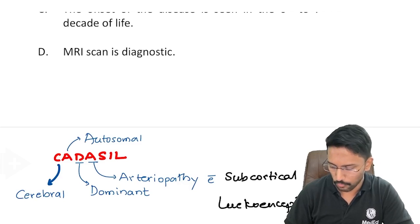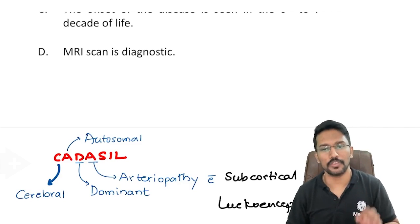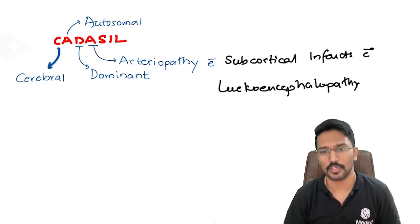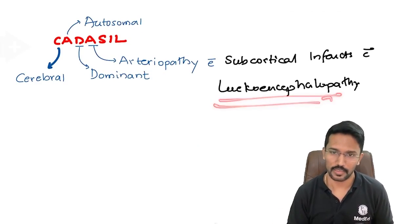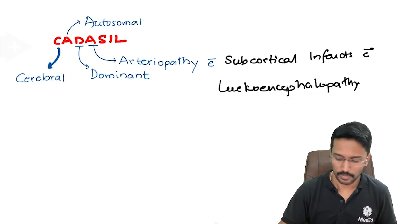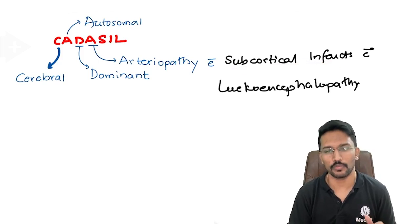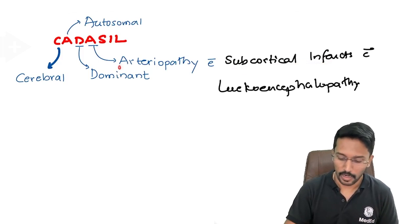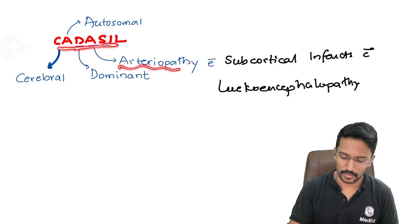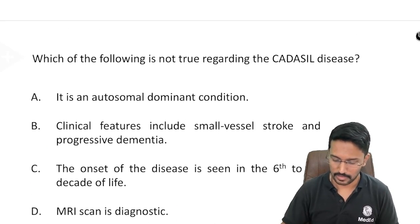Basically that means you have white matter changes. So often this condition can be a differential diagnosis for multiple sclerosis because that is also where you have white matter changes. Here also you can have white matter changes, you have subcortical infarcts which is because of an autosomal dominantly inherited arteriopathy. So we call it collectively as CADASIL disease.